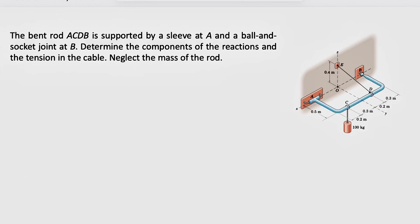Alright, welcome back guys. We're going to be solving another question from the third chapter of Engineering Mechanics by Meriam. We have the bent rod ACDB that is supported by a sleeve at point A and a ball and socket joint at point B. We need to determine the components of the reactions and the tension in the cable, and we can neglect the mass of the rod. As always, we're going to start with the free body diagram and see how many forces are applying to the bent rod ACDB.